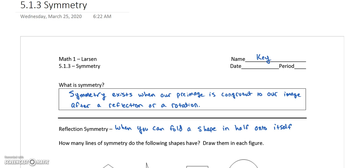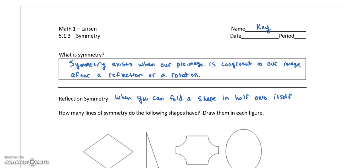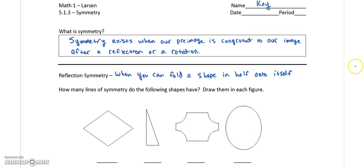These notes should also be relatively quick. So today we're going to talk about symmetry. We're on 5.1.3 in the book. These notes are separate, so you'll have a PDF attached to our classroom post. So symmetry, most of us have heard that word. Whether we can define it or not is another thing. But here's how we're going to define it. It exists when our pre-image is congruent to our image after a reflection or a rotation. We're going to talk about two types of symmetry today: reflection symmetry and rotational symmetry.